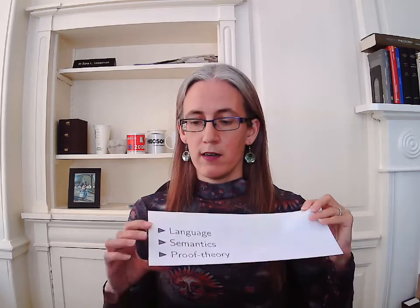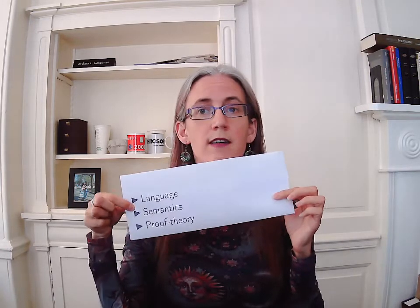And that's where number two comes in: semantics. The semantics is what gives the meaning to both the logical and the non-logical symbols. Now, this distinction between logical and non-logical is, again, something that's kind of specific to an individual logic. What is a logical symbol in one logic might be a non-logical symbol in another logic. What the details of those are, don't worry — we will get to them in a later video.